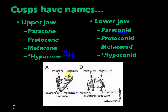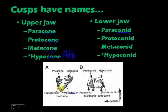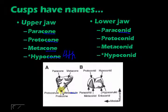At the labial side — the side near the lips — you also have what is called a styler shelf, and there are names for the cusps there, like the parastyle and metastyle. At the lingual side there is another shelf called the cingulum, and there are also names for the cusps found there.